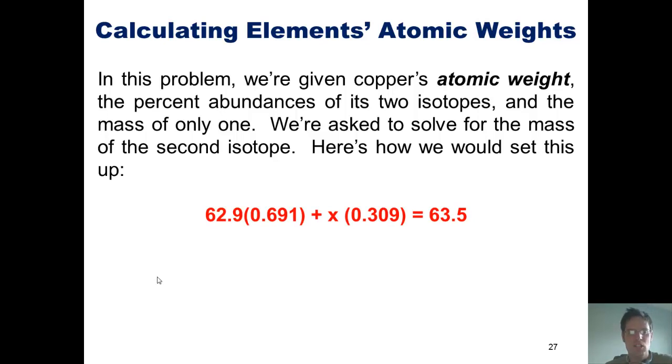We would take the individual masses of each isotope, multiplied by their relative fractional percentages, added in this equation, and set those equal to the overall atomic weight for the element of copper.